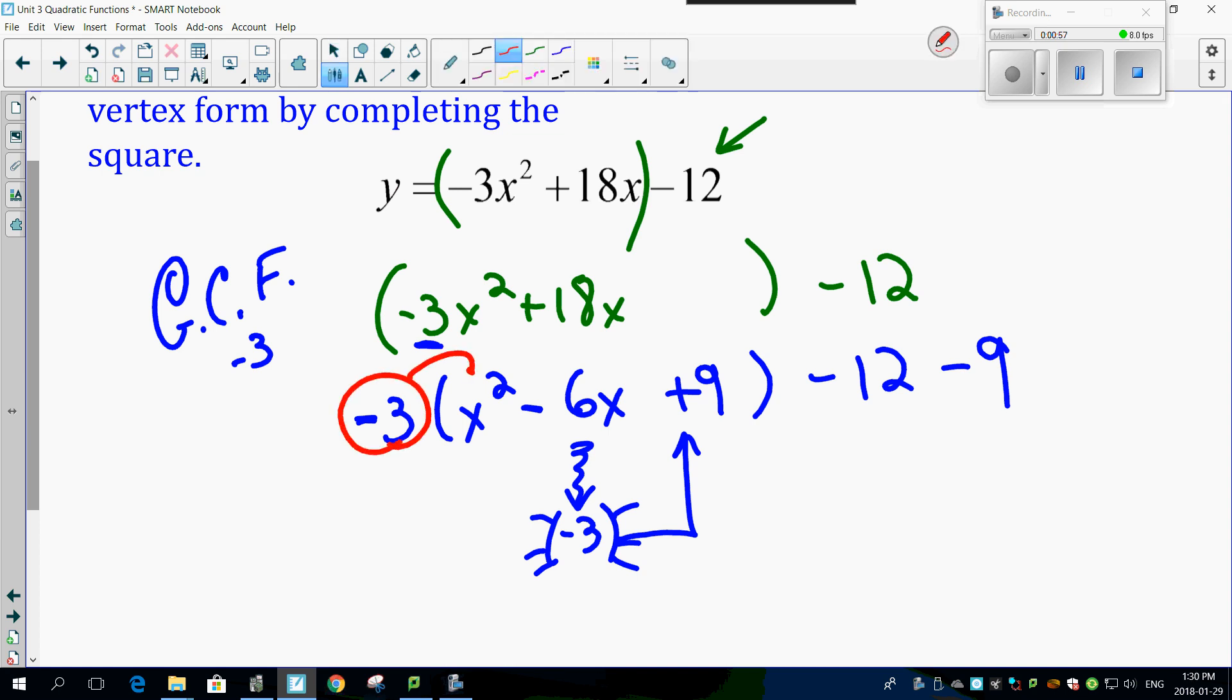...everything was distributed, including the minus 3 to the 9 that you're trying to get rid of. So just distribute it one more time to the minus 3 out here. So minus 3 times minus 9 is a positive 27.